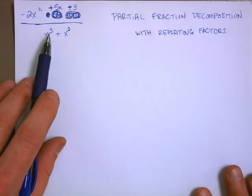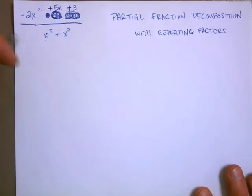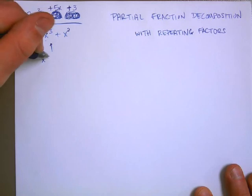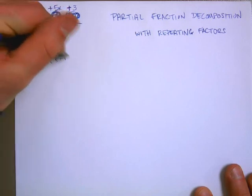Now, if I factor out, I can factor out an x squared. The bottom factors out into x squared, and I have an x plus 1 remaining.